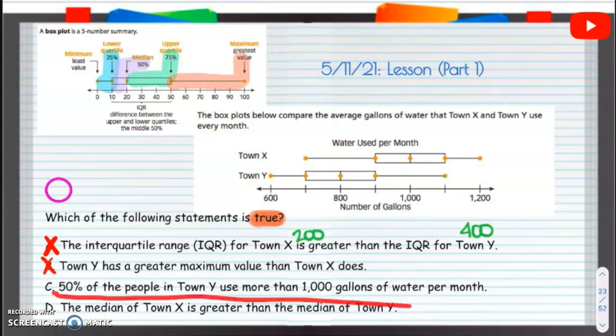All right, do 50% of the people in town Y use more than 1,000 gallons of water per month? So here is 1,000 gallons of water. Town Y, do they use more than that? The people that use more than that is just this little portion. 50% is going to be two of the portions, but this is only a half of one of the portions, so that's not right either.